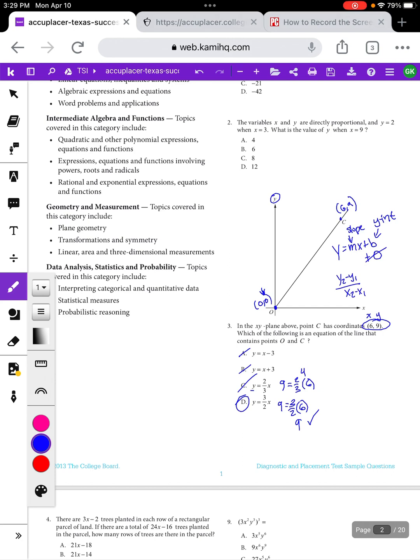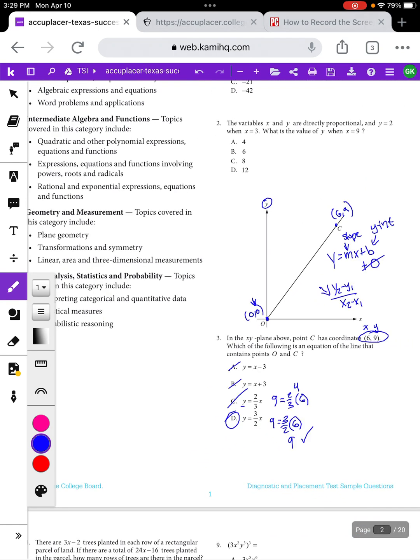But if this last part was confusing to you, you can always come back to the beginning and use your slope formula, and you would still end up with 3 over 2 for your slope, so it would still have to be D.